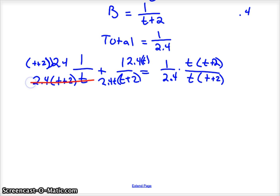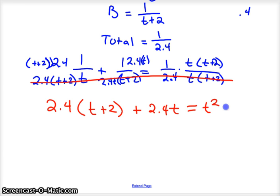And so over t and t plus 2. So at this point in your math education, I hope you realize that once you have common denominators, you can cross them out when it's an equation because you could just multiply by whatever the denominator is and it's gone. And so we would have leftover 2.4 times t plus 2 plus 2.4 times t, and then we have equals t squared plus 2t.